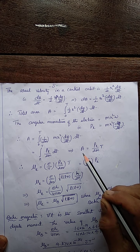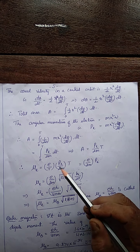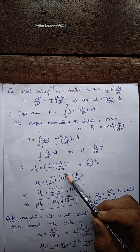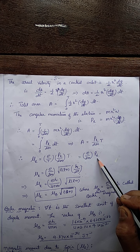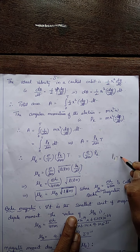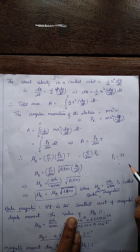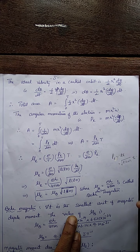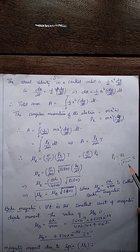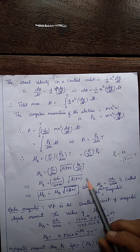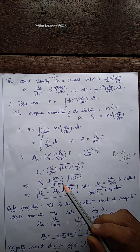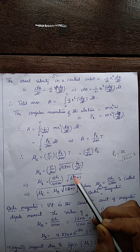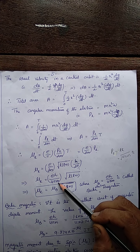Substituting this area A into the expression for μL: μL = (e/T) × A = (e/T) × (PL/2m) × T. T cancels, giving μL = (e/2m) × PL. Since the orbital angular momentum PL is quantized, it equals L·ℏ (Bohr model) or √(L(L+1))·ℏ (wave mechanics). Substituting, μL = (eH/4πm) × √(L(L+1)).